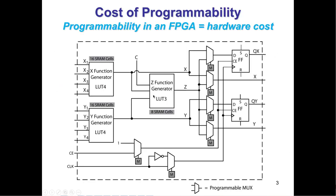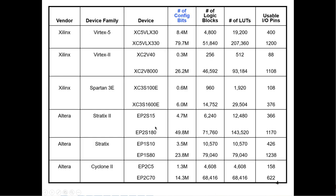The cost of programmability — how many RAM cells does it take to program these things? For a LUT4 that's 16, but we have LUT6s so that's 64 per LUT, plus another 64, so 128 total. We have a bunch of multiplexers — a 2-to-1 takes at least one bit, a 4-to-1 takes two bits. Then we have flip-flops as well.